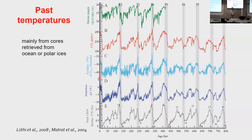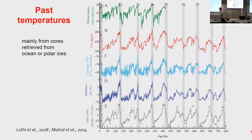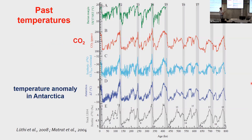Geoscientists are very much interested in past temperatures and past composition of the atmosphere, and try to produce climate models to understand what is going on. They have a lot of proxies to get an idea of past conditions. Most of them come from the ocean or from polar ice cores. Here you can see time going back as far as 800,000 years, with oscillations in different observables.